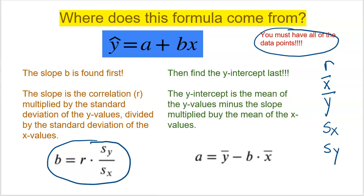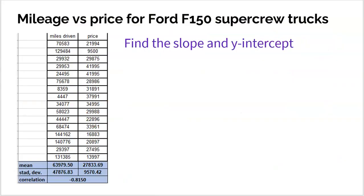Then you move on to finding A, the y-intercept. To find A, you take the average y and subtract the slope times the average x. That's why you have to find the slope first. On the left-hand side I have all the data — all the different trucks, all the mileages (x's), and all the prices (y's). At the bottom I've found the average for the x's (miles), the average for the y's (price), the standard deviations for x and y, and the correlation R. It's super important to keep these five values organized — make sure you know which are your x's and which are your y's.